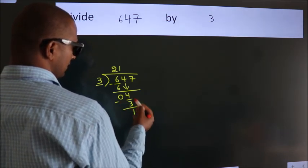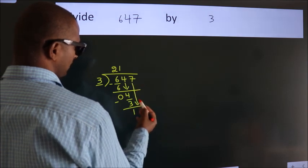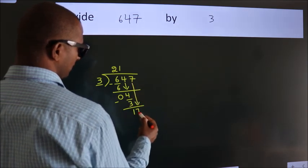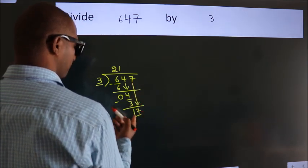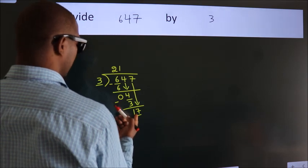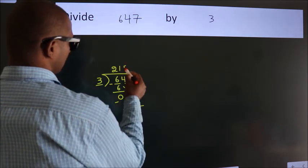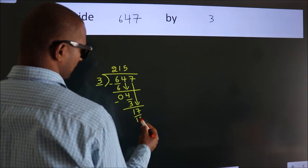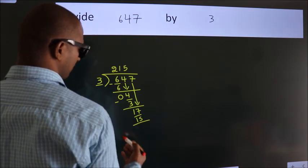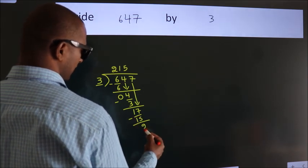After this, bring down the beside number. So, 7 down. So, 17. A number close to 17 in 3 table is 3 5s, 15. Now, we subtract. We get 2.